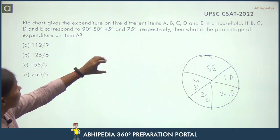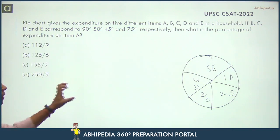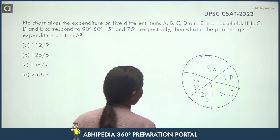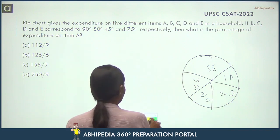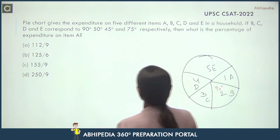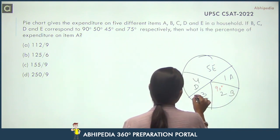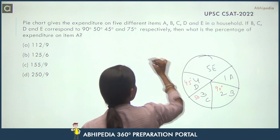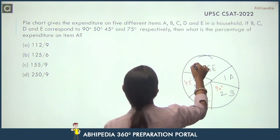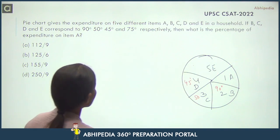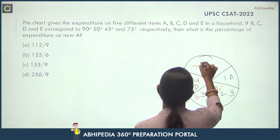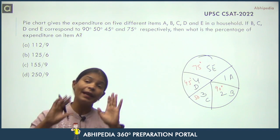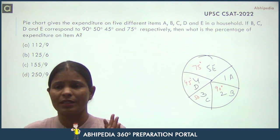Ab question mein aap se kya pucha gaya hai — the corresponding angles of B, C, D, E are given. Kitna angle hai: B is 90 degrees, C is 50 degrees, D is 45 degrees, and E is 75 degrees. And now the question is — A ka expenditure kitna hai — and the expenditure should be in percentage.